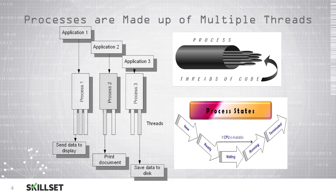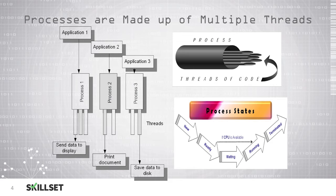When a process first starts, it is in the new state and then it moves to the ready state. If the CPU is available, the process will move directly to the running state, but if the CPU is not available, the process will wait until the CPU is available and then will run. Once the process is finished running, then it will be terminated.